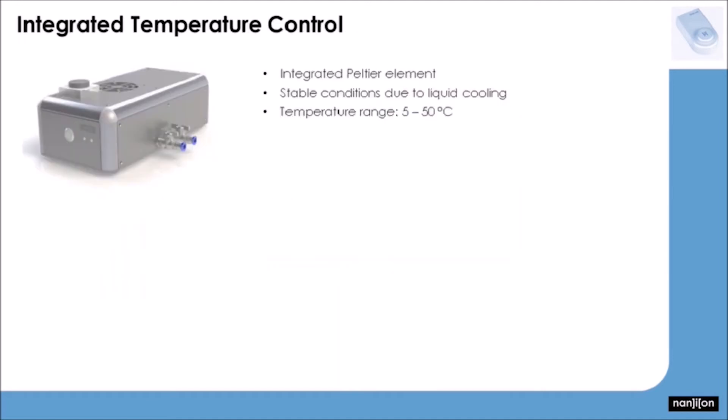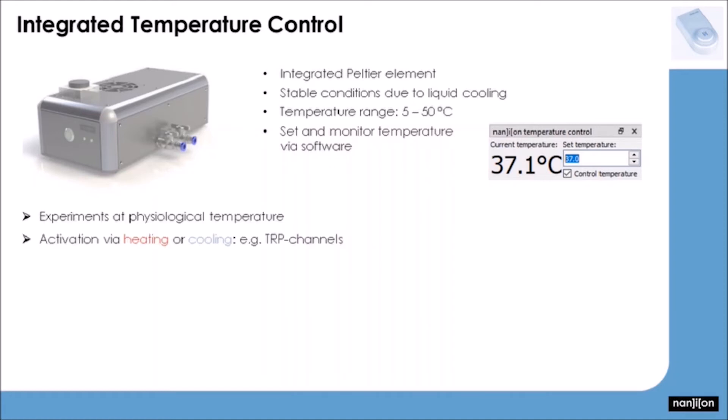And finally, I want to introduce an optional add-on, the temperature control system for the Orbit Mini. It offers the possibility to freely control the experiment's temperature in a range of 5 to 50 degrees, which means that you can actively heat and cool. You can set and monitor the desired temperature conveniently via the recording software, and the temperature control will keep it constant virtually for hours. This enables not only experiments to be carried out at physiological temperature, but also the investigation of temperature-sensitive species like, for example, TRIP channels.